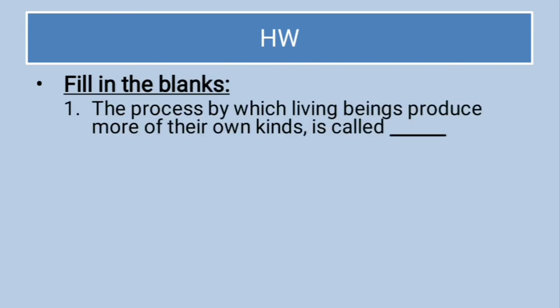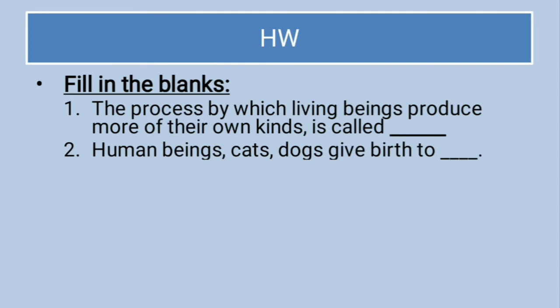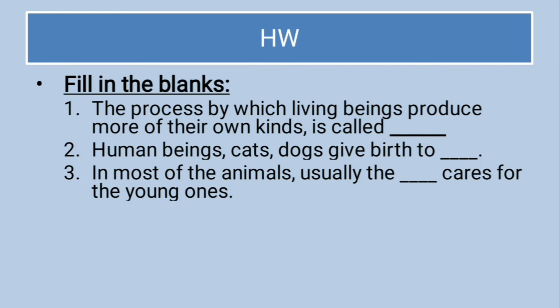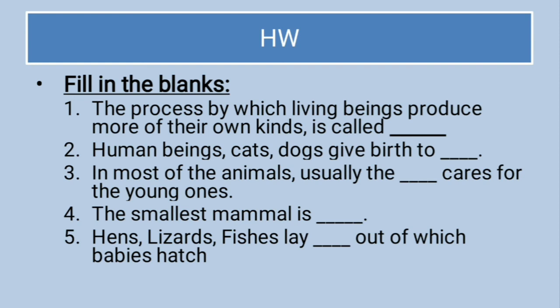That was all for today. The homework is to solve these fill-in-the-blanks. First: the process by which living beings produce more of their own kind is called dash. Second: human beings, cats, dogs give birth to dash. Third: in most animals, usually the dash cares for the young ones. Fourth: the smallest mammal is dash. Fifth: hens, lizards, fishes lay dash out of which babies hatch. You have to solve these fill-in-the-blanks — they are really easy because we have already discussed these points. You can watch the video carefully and you will easily be able to solve these questions.